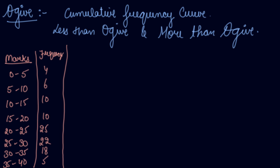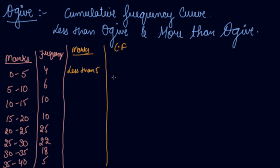Let's construct the less than Ogive first. For this, we will find out the cumulative frequency. We will write here 'less than 5.' How many students are there who scored less than 5? The number of students are 4.